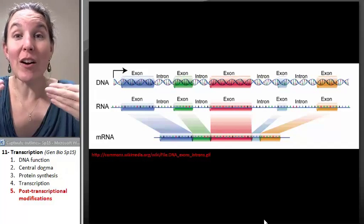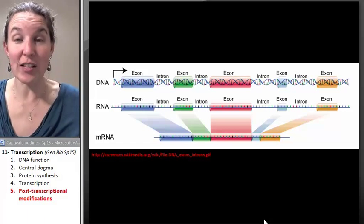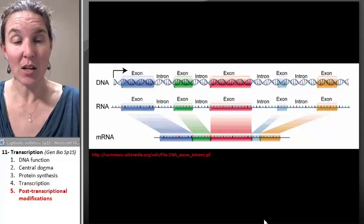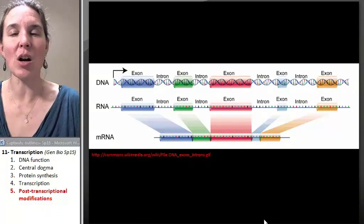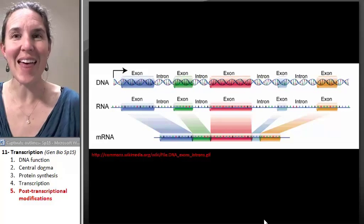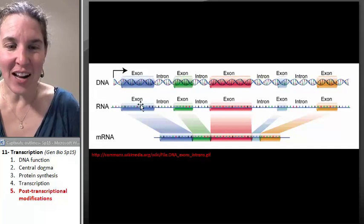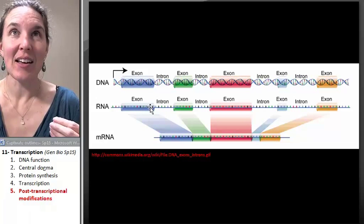But in eukaryotes, what's actually transcribed can be thousands and thousands and thousands of nucleotides long. So this pre-messenger RNA can be huge, and then, this is crazy, then the RNA gets cut up.